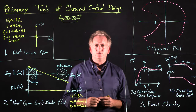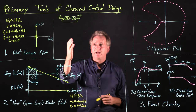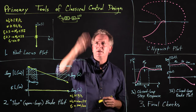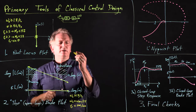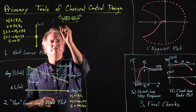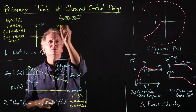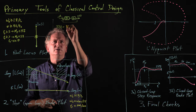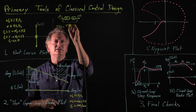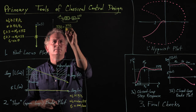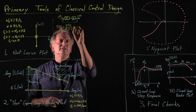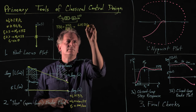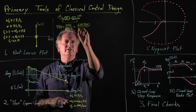We now have all the primary tools in place so we can discuss how to do classical control design. We have our feedback connection from a reference input to a measured output. We've seen in a previous lecture that we can denote the transfer function of the closed-loop system, which we denote T, which is Y over R, as simply g(s)d(s) over 1 plus g(s)d(s).